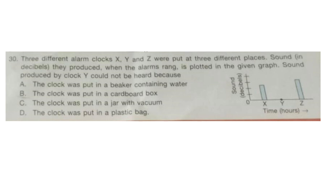Question 30. Three different alarm clocks X, Y and Z were put at three different places. The sound in decibels they produced when the alarm clock rang is plotted in the given graph. Sound produced by clock Y could not be heard because — options are: A, the clock was put in a beaker containing water; B, the clock was put in a cardboard box; C, the clock was put in a jar with vacuum; D, the clock was put in a plastic bag. The correct answer is option C: the clock was put in a jar with vacuum. Sound does not travel in vacuum.